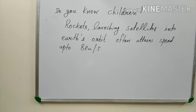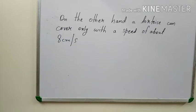Do you know, children, rockets launching satellites into Earth's orbit often reach speeds up to 8 km per second. On the other hand, a tortoise can cover a distance with a speed of only about 8 cm per second.